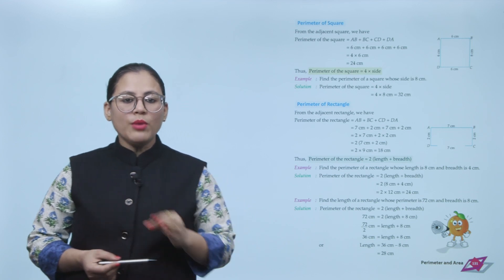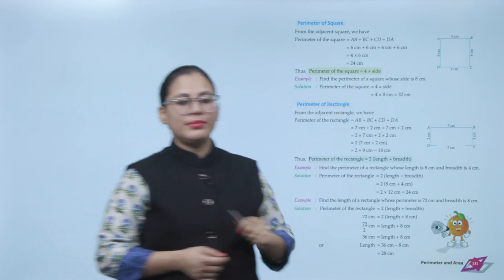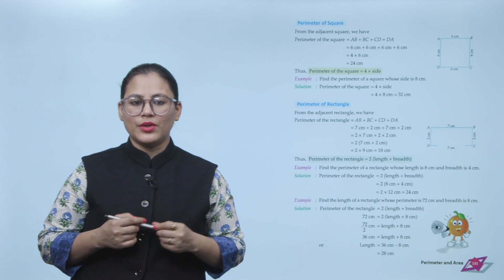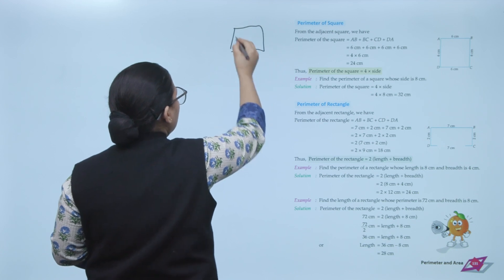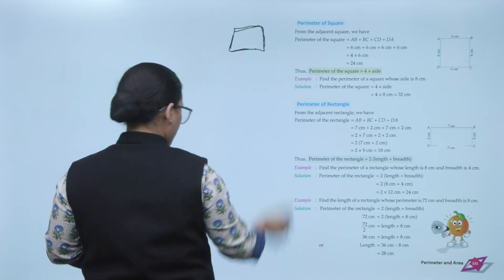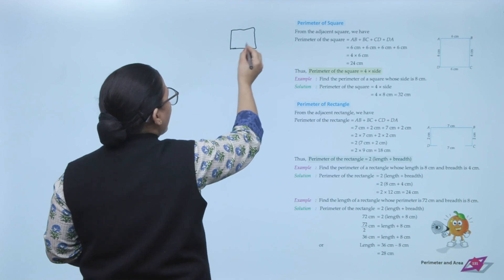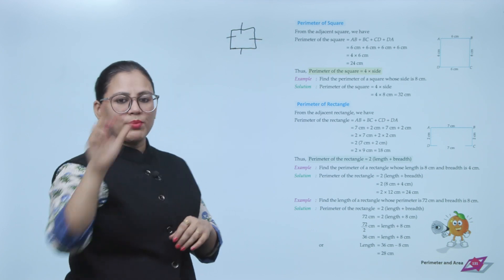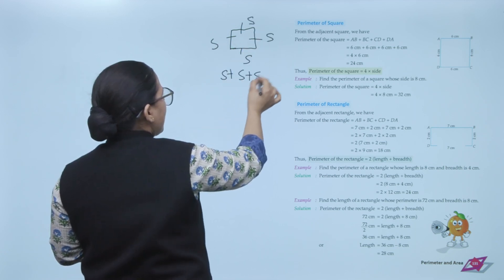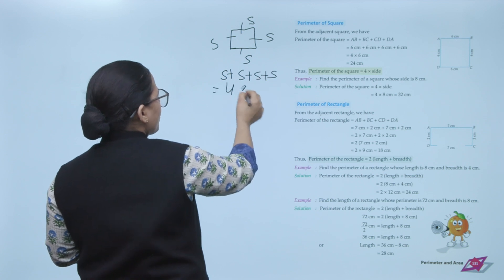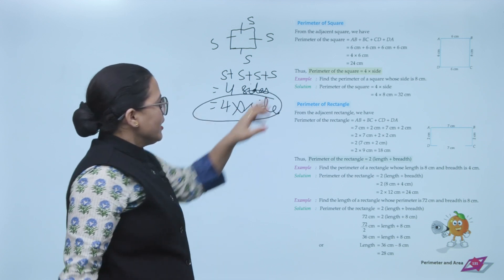Perimeter of a square: from the adjacent square, perimeter equals AB + BC + CD + DA. Since a square has 4 equal sides, the perimeter of a square equals 4 × side. Side plus side plus side plus side — four sides — so the formula is 4 × side.